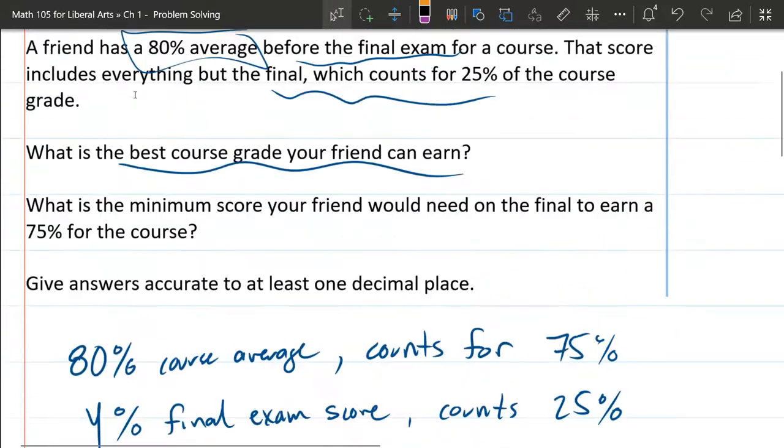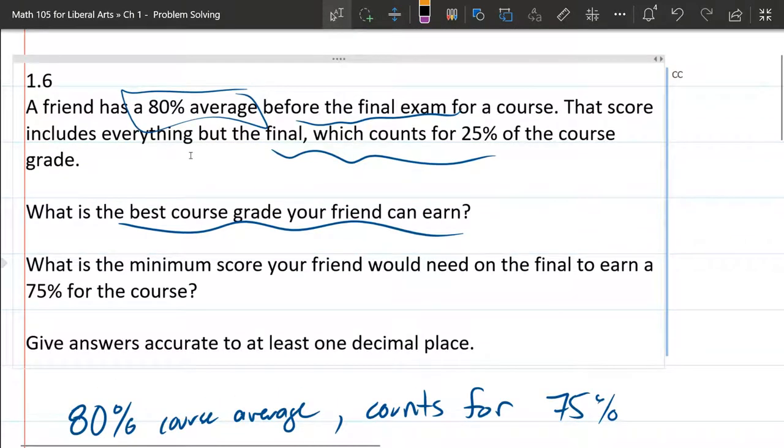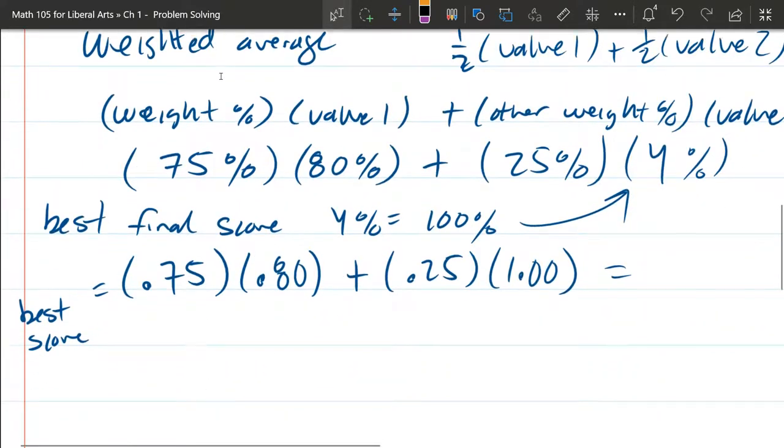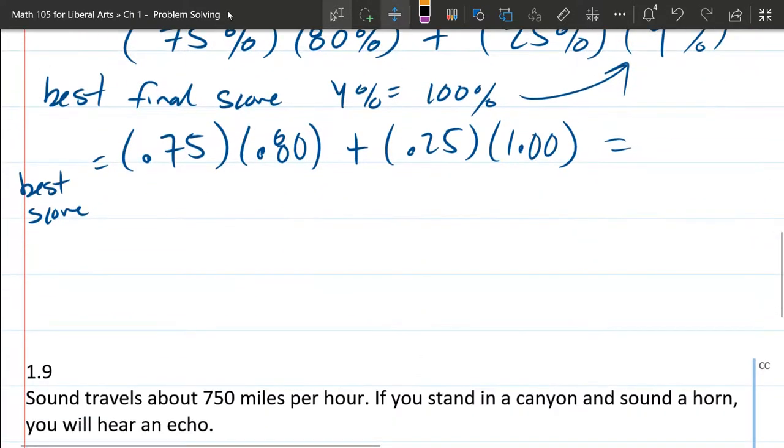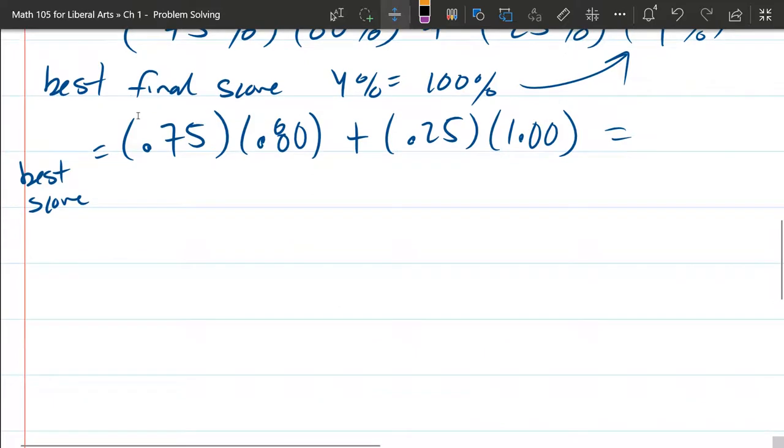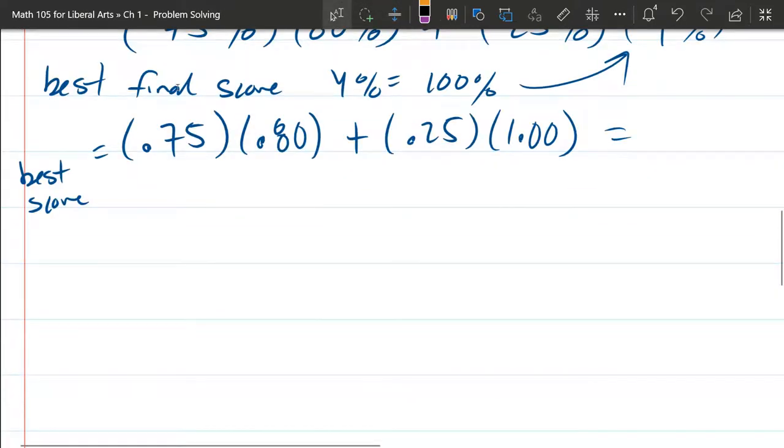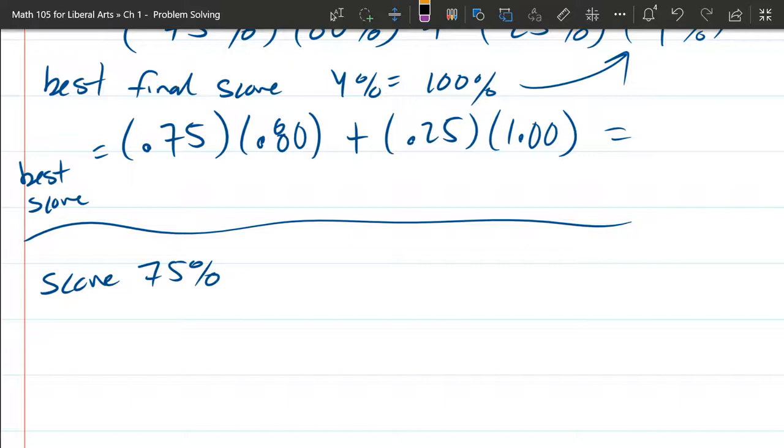Now what we're going to do is part B. Minimum score needed to get a 75% in the course. This one's a little bit more tricky because we need to score 75% in the class. So that means not the best score, but the actual score is 75%.